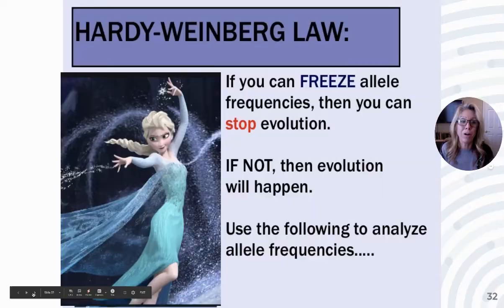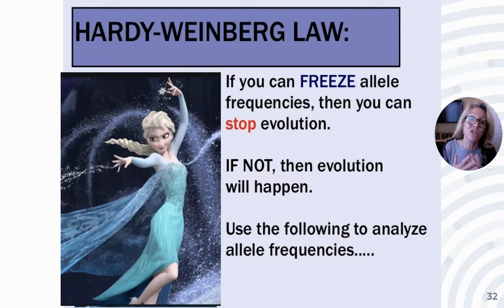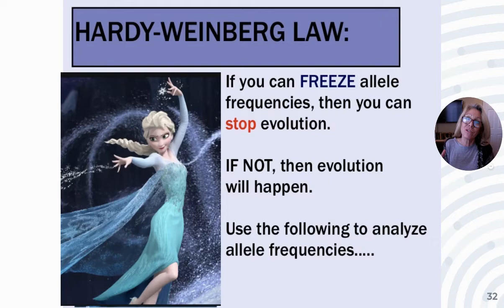Now let's talk about the Hardy-Weinberg law. If you can prevent allele frequencies from changing, then you can prevent evolution. What the Hardy-Weinberg principle is really doing is showing you — through the back door — that you can't prevent them. There are too many things that can change allele frequency. And if you can't stop allele frequencies from changing, then you can't stop evolution. Evolution is occurring.